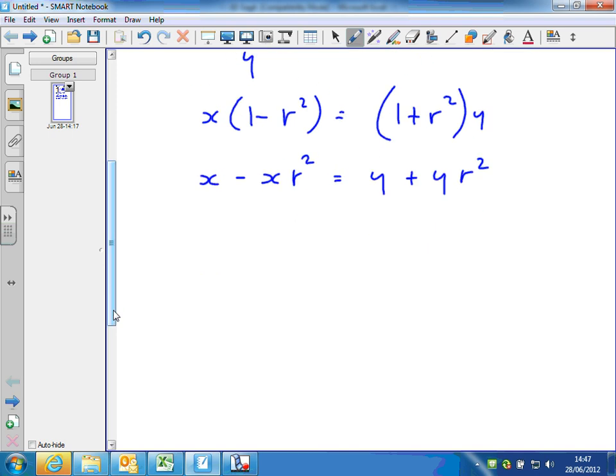Now I'm going to get terms involving r squared on the same side. So it's probably a good idea to add xr squared to both sides. That makes that positive. And then subtract y from both sides to get the terms on the left hand side. So x minus y equals yr squared plus xr squared.